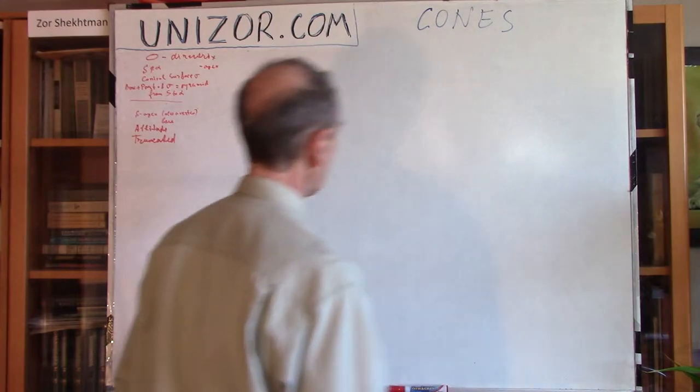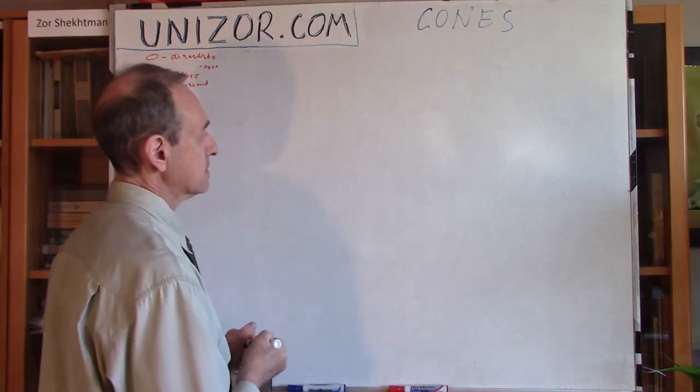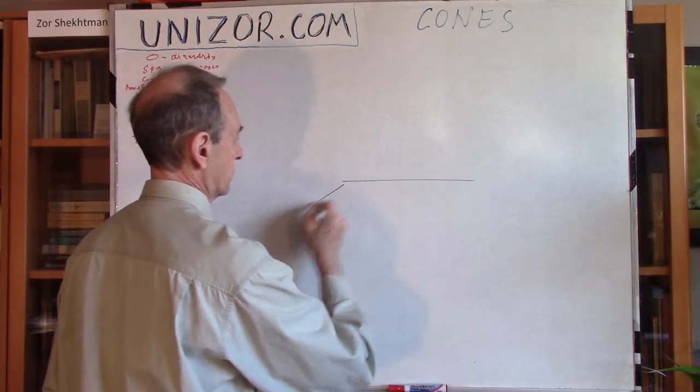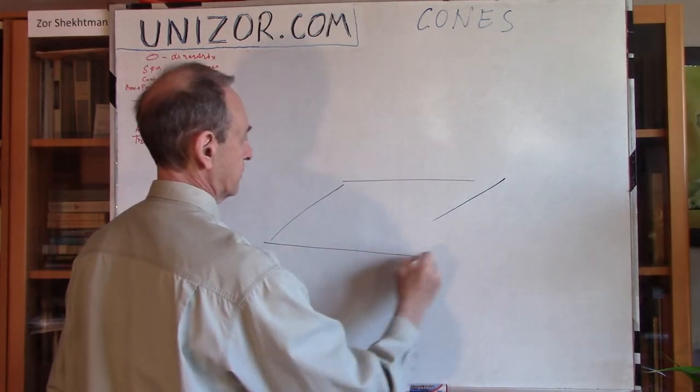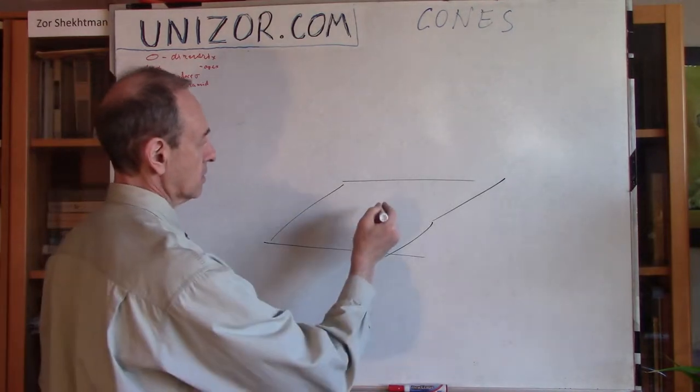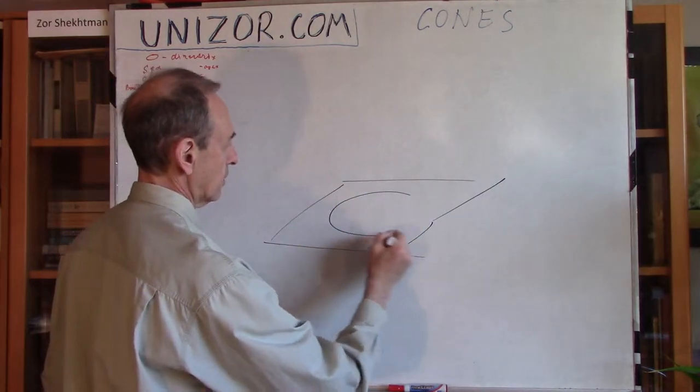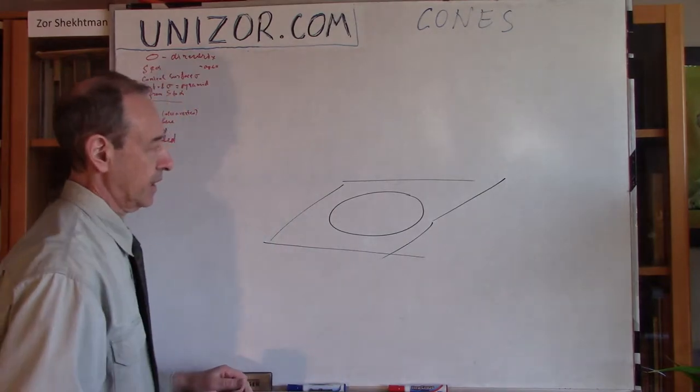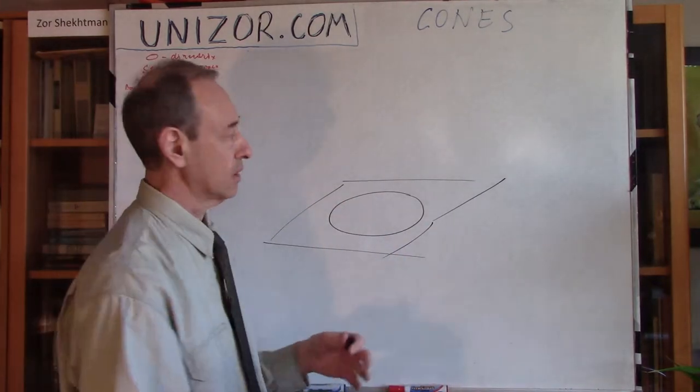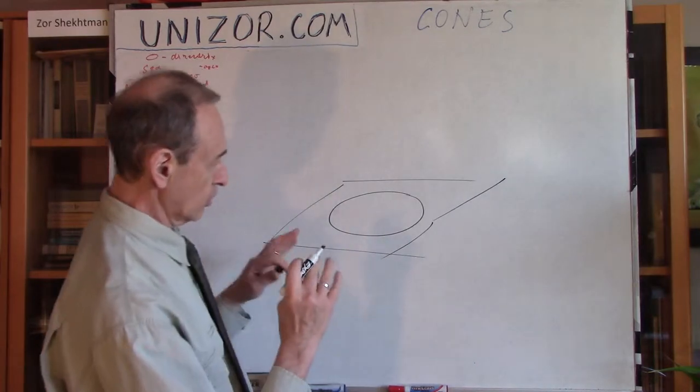So, how can we define the cone? Let's consider you have a plane. This is our plane. And I'm looking at this from the side. And let's consider you have a circle in that plane. Now, I draw it as an ellipse or oval, just because you're looking from the side.